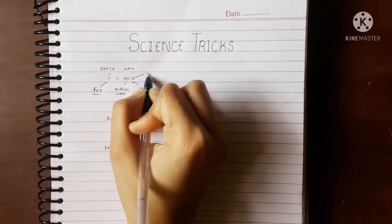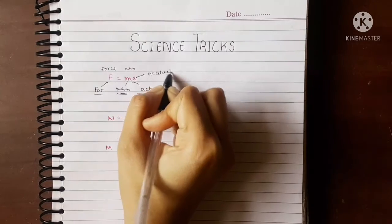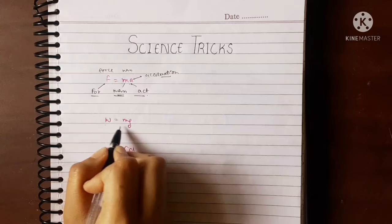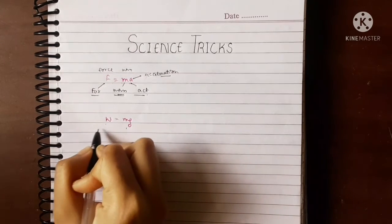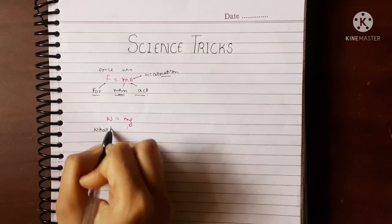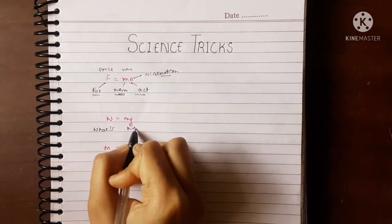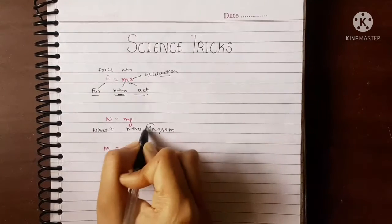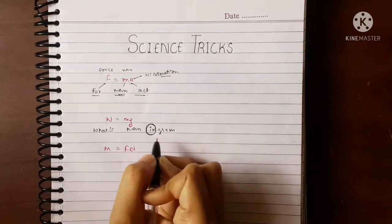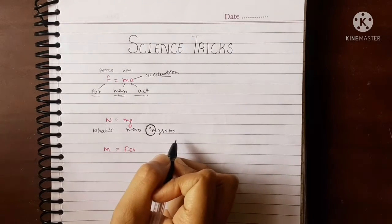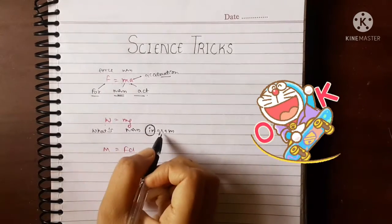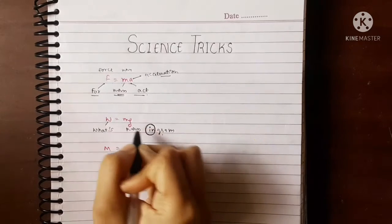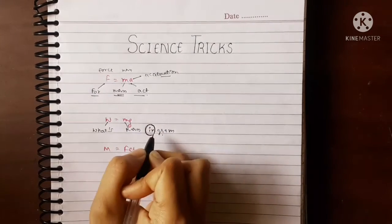Now for the formula of weight W equals mg, that is 'what's mass in gram'. You can remember it as 'what's mass in gram' or 'what's mass gram'. What's means weight, m represents the mass, and g represents gravity.